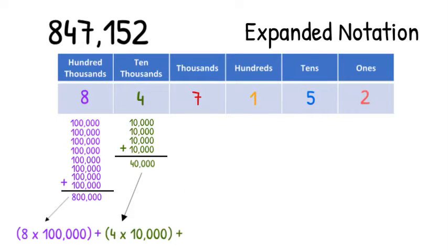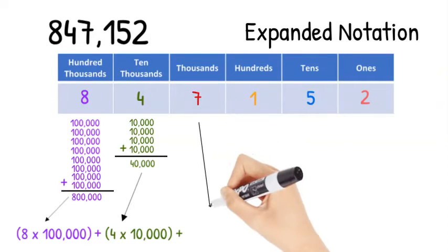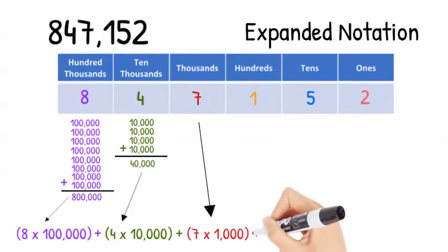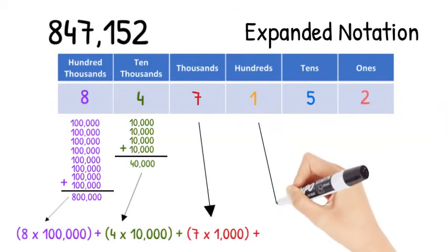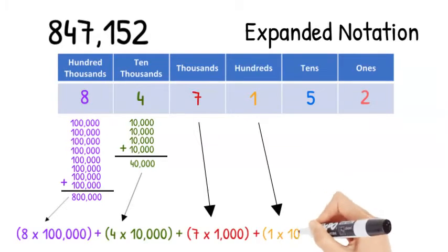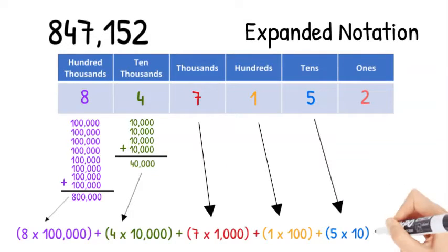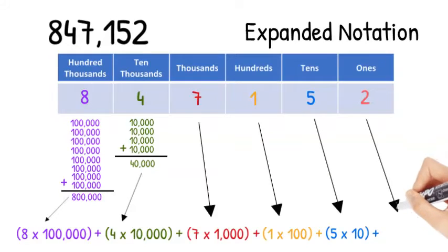Now that we understand how this works, let's finish the remaining values in expanded notation. There are 7 thousands so we will add 7 multiplied by 1,000. We have 1 hundred, so we will add 1 multiplied by 100. Next there are 5 tens so we will add 5 multiplied by 10. Finally we have 2 ones. We will add 2 multiplied by 1.